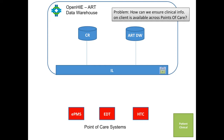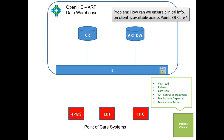Next, we get into the clinical information. For this, we're going to add an ART data warehouse that will capture just the clinical information about the clients. This could include things such as the viral load, referrals, care plan, the ART course of treatment, medications dispensed, medications taken, as well as basic information about the client such as height and weight. All of these point-of-care systems can either produce or utilize that information, and this is where the ART data warehouse comes in. The same FHIR standard we were utilizing for client demographics can also be used to represent the clinical information we're capturing on the client.